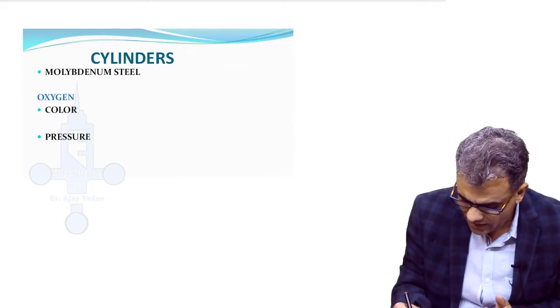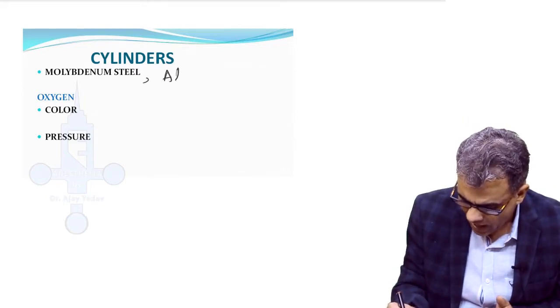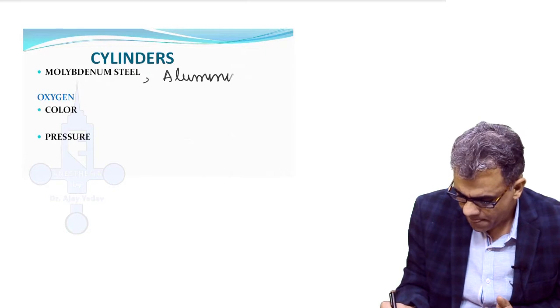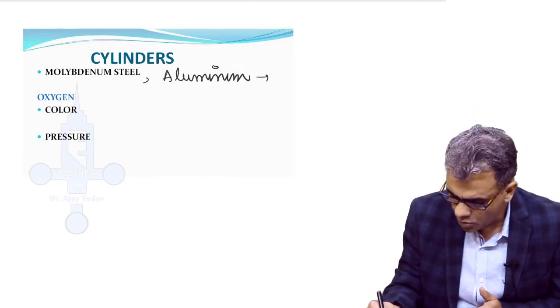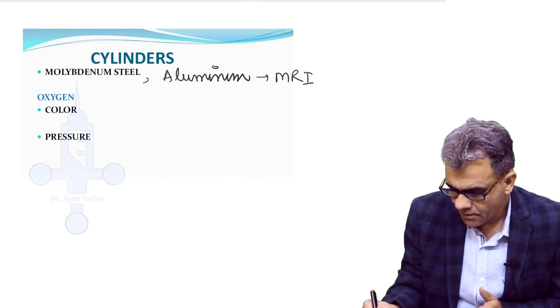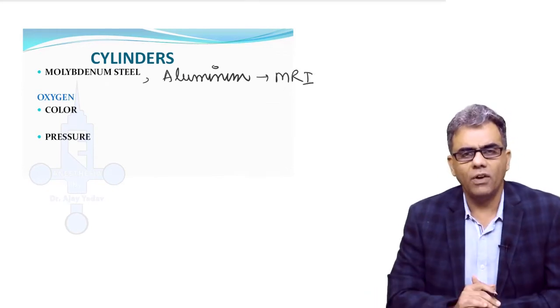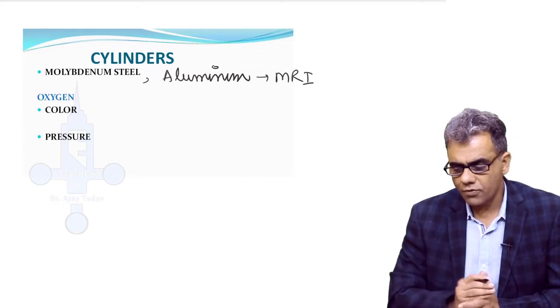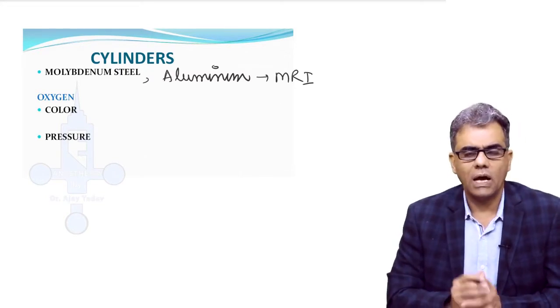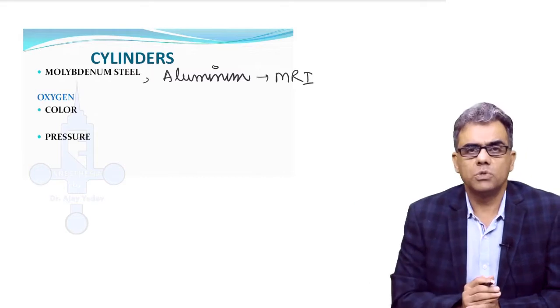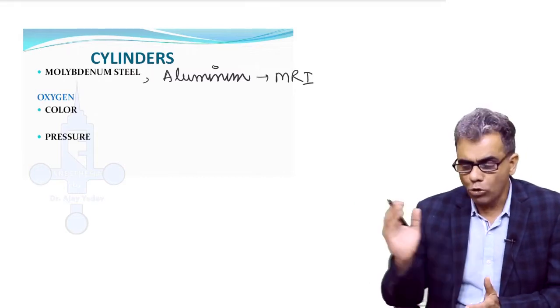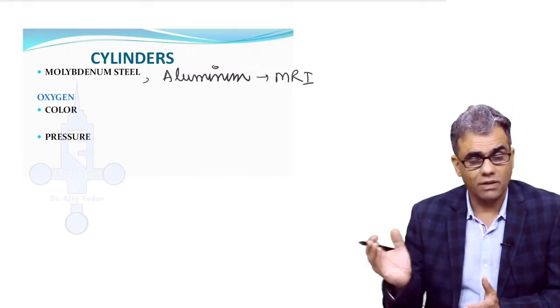The second type of cylinders that you see is aluminum cylinders. Aluminum cylinders are only being used for MRI suites because MRI is a magnetic field—you cannot use steel. We have to use aluminum cylinders, and in fact not only cylinders, the machine that we are using in MRI suite is also made up of aluminum, but that is very expensive.